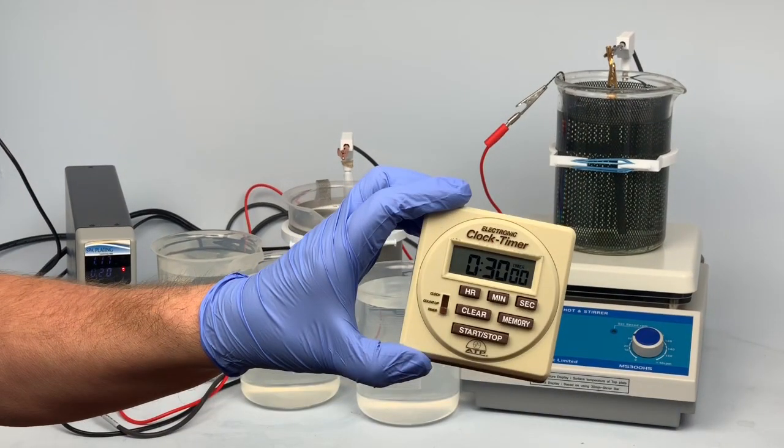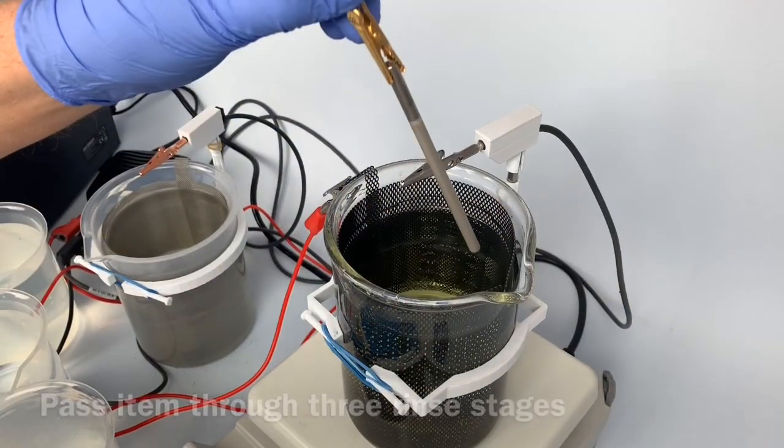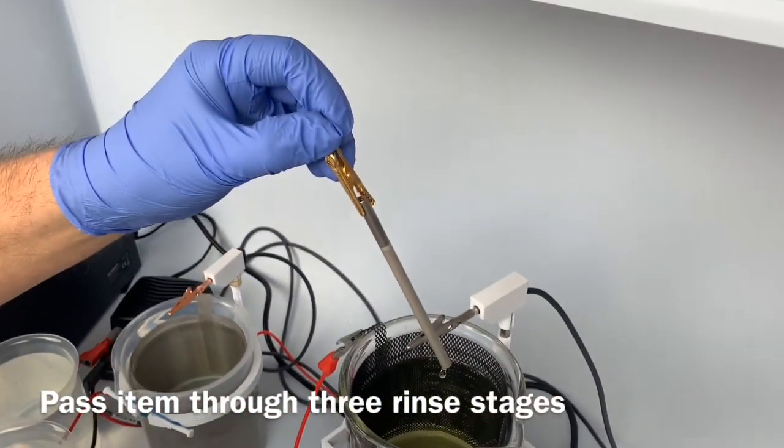Once the rectifier is on, set the timer for 30 minutes. After 30 minutes, take it out and pass it through the three rinse stages.